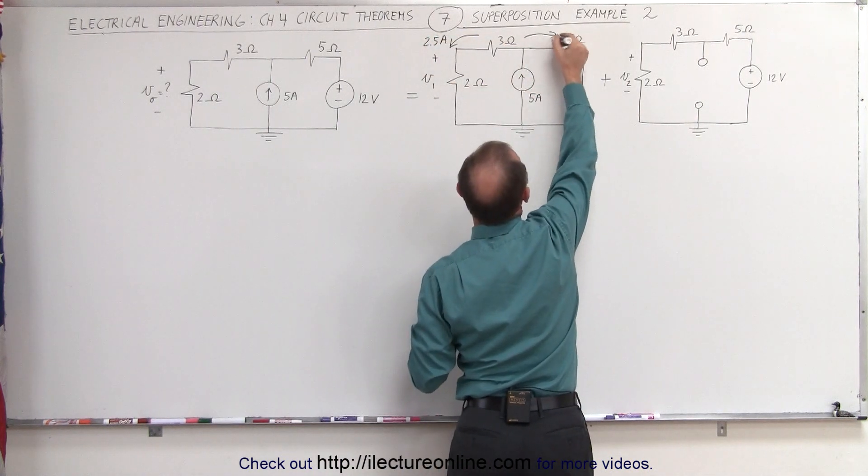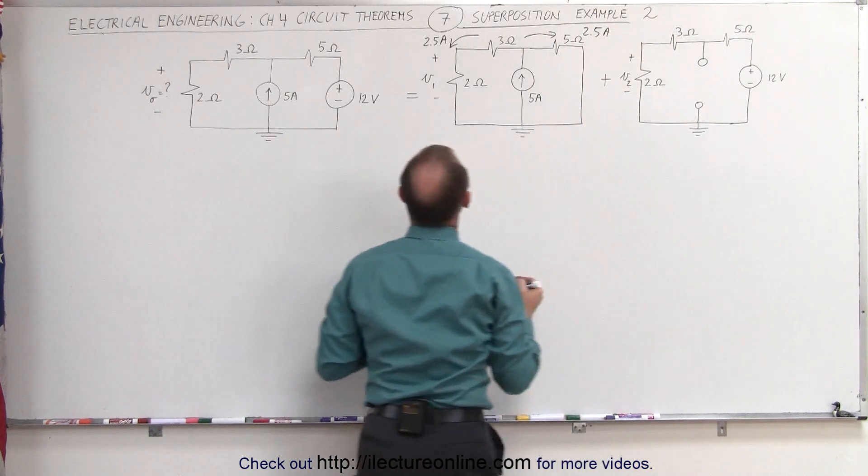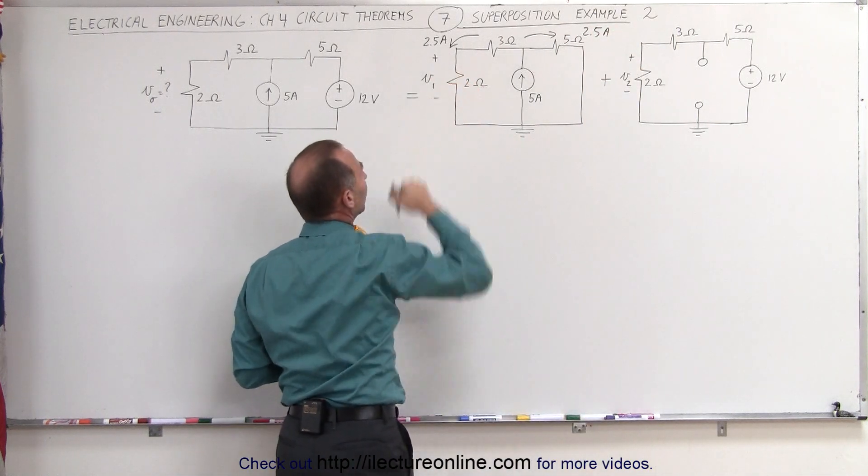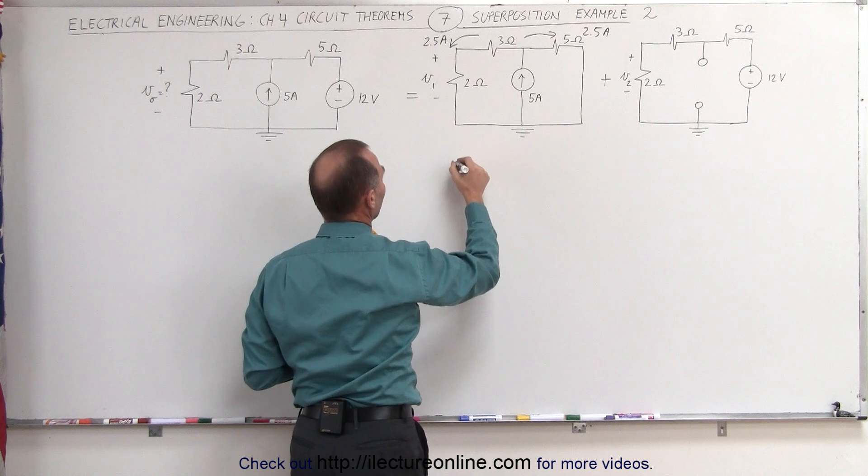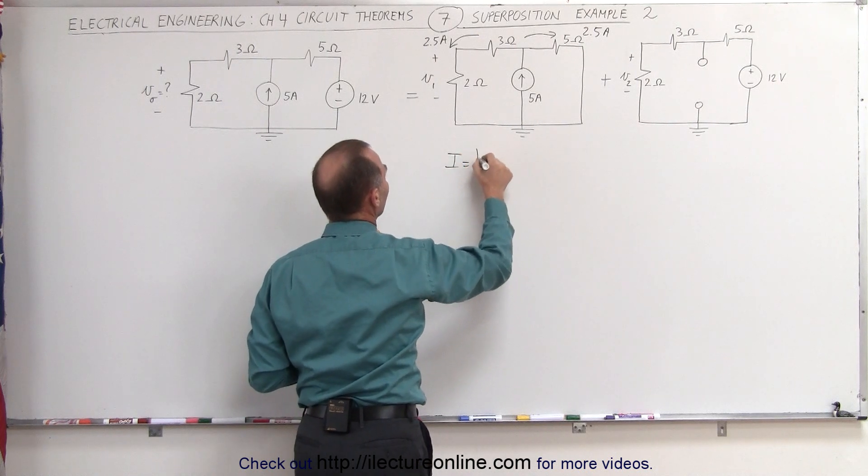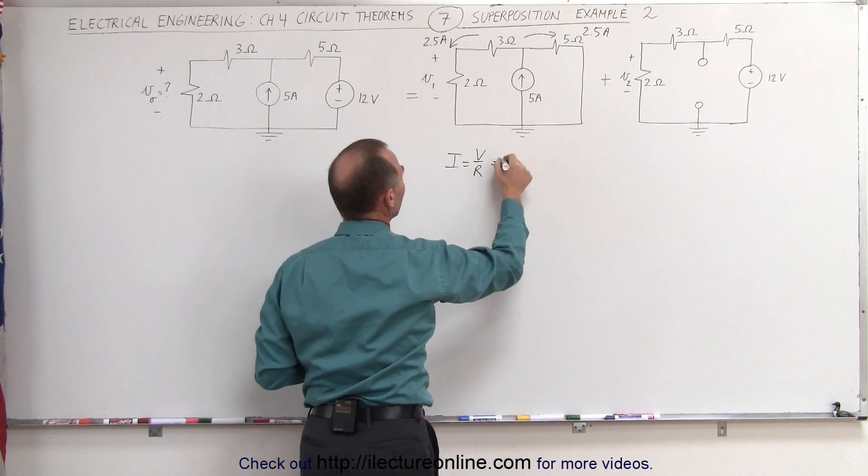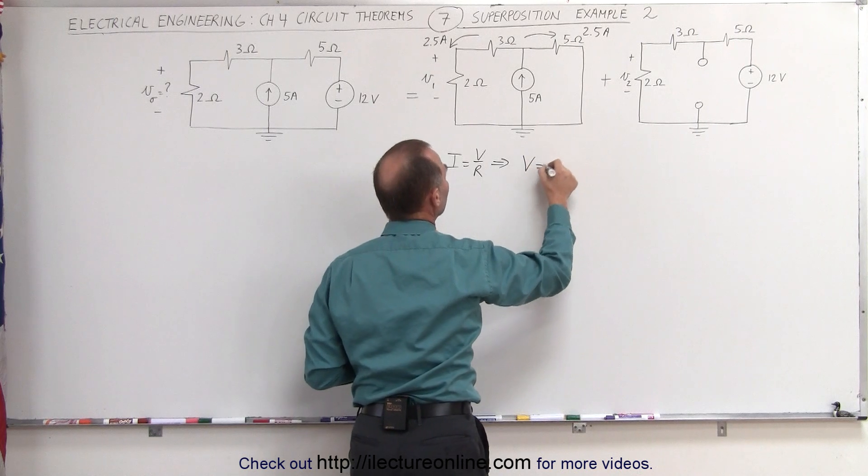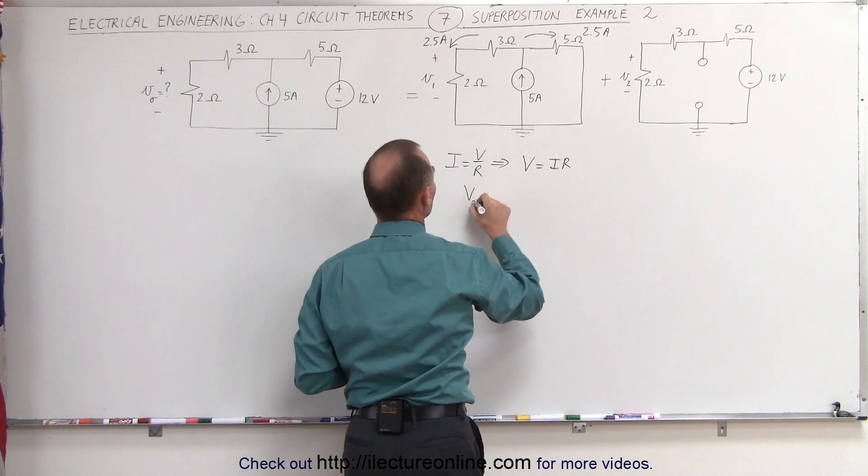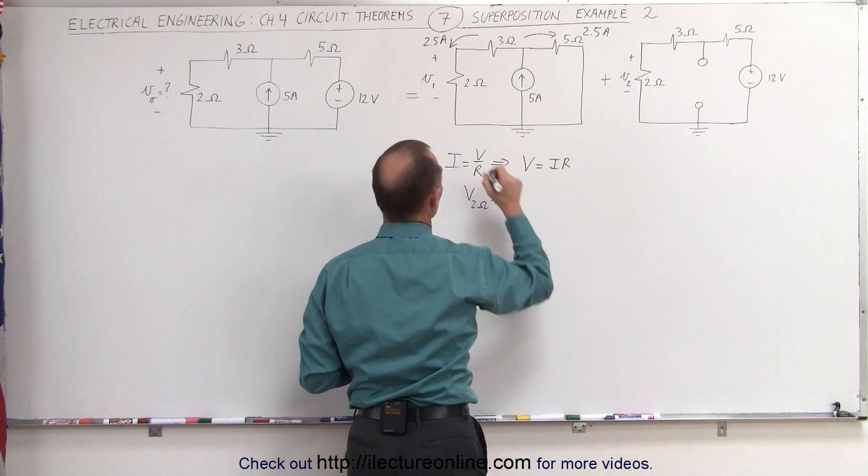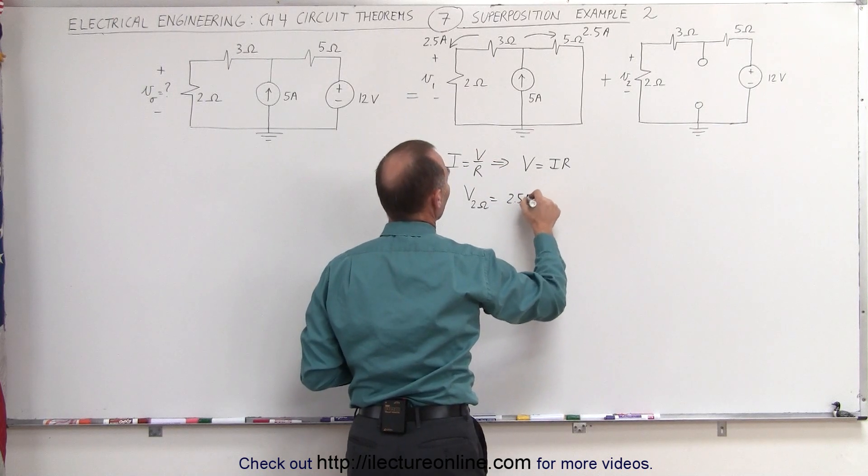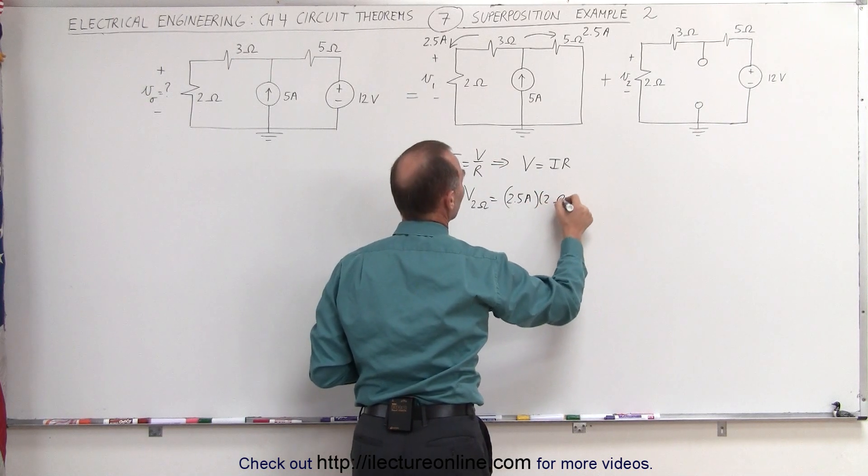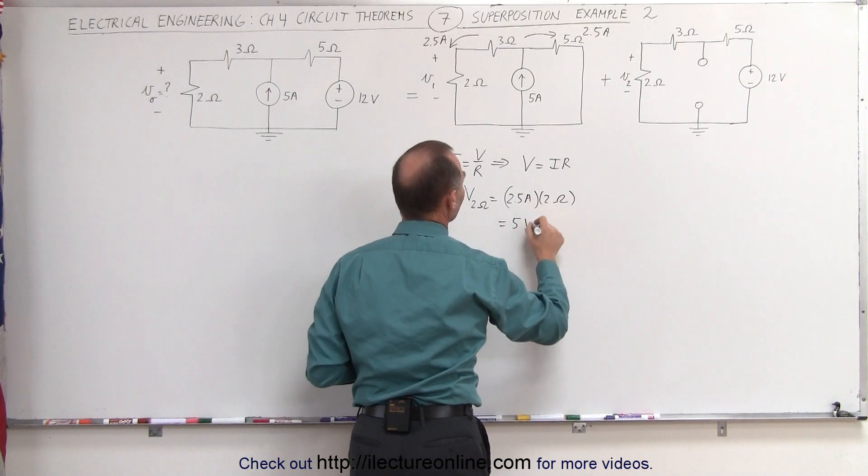So 2.5 amps will go through this branch. What that means is I can now calculate V across the 2 ohm resistor and know that the current is equal to V over R, Ohm's law, which means that the voltage will be equal to I times R. In this case, the voltage across the 2 ohm resistor will be equal to the current 2.5 amps times the resistance 2 ohms, which is equal to 5 volts.